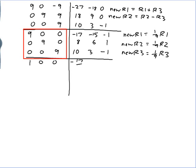Completing the division: row 1 gives minus 17 ninths, minus 15 ninths, minus 1 ninth on the right. Row 2 gives 0, 1, 0 on the left and 8 ninths, 6 ninths, 1 ninth on the right. Row 3 gives 0, 0, 1 on the left and 10 ninths, 3 ninths, minus 1 ninth on the right.